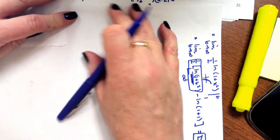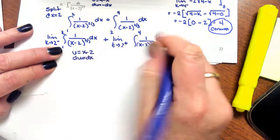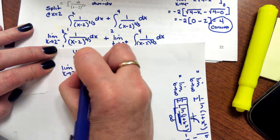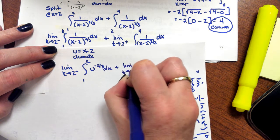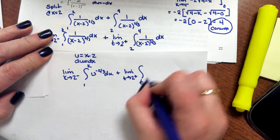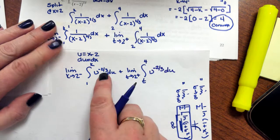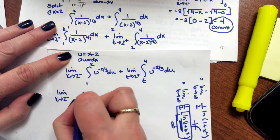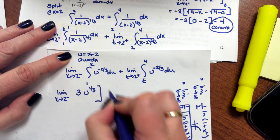Doing a U-substitution with U equals X minus 2 and DU equals DX, we rewrite as: the limit as K approaches 2 from the left of the integral from 1 to K of U to the negative 2/3 DU, plus the limit as T approaches 2 from the right of the integral from T to 4 of U to the negative 2/3 DU. Integrating by adding 1 to the exponent gives U to the 1/3, divided by 1/3, which is 3 — so 3 times U to the 1/3, evaluated from 1 to K.